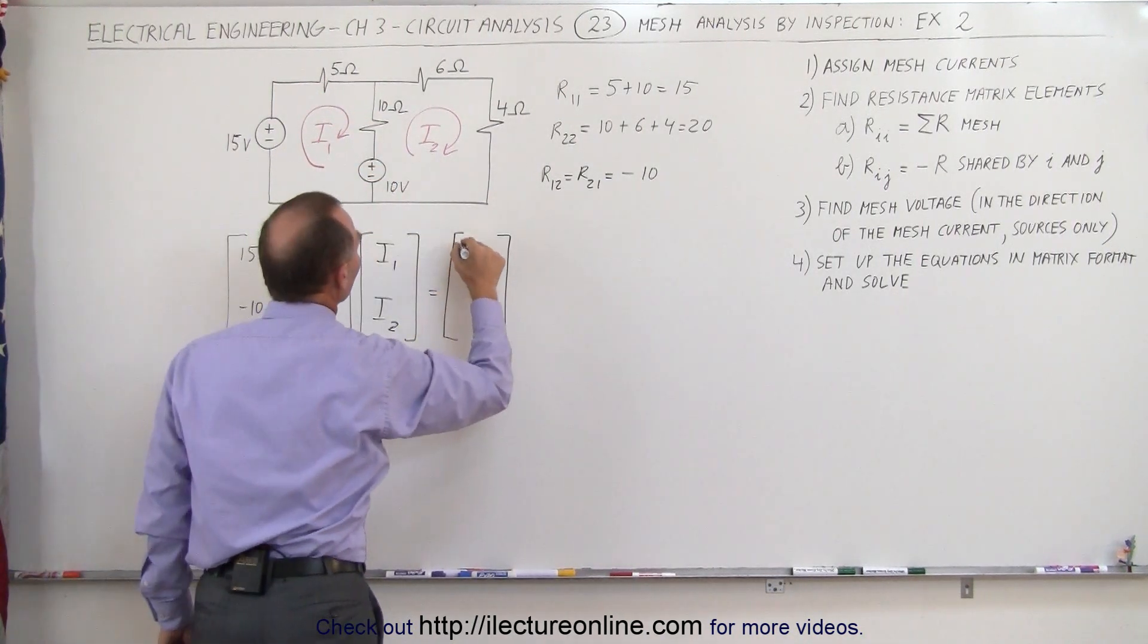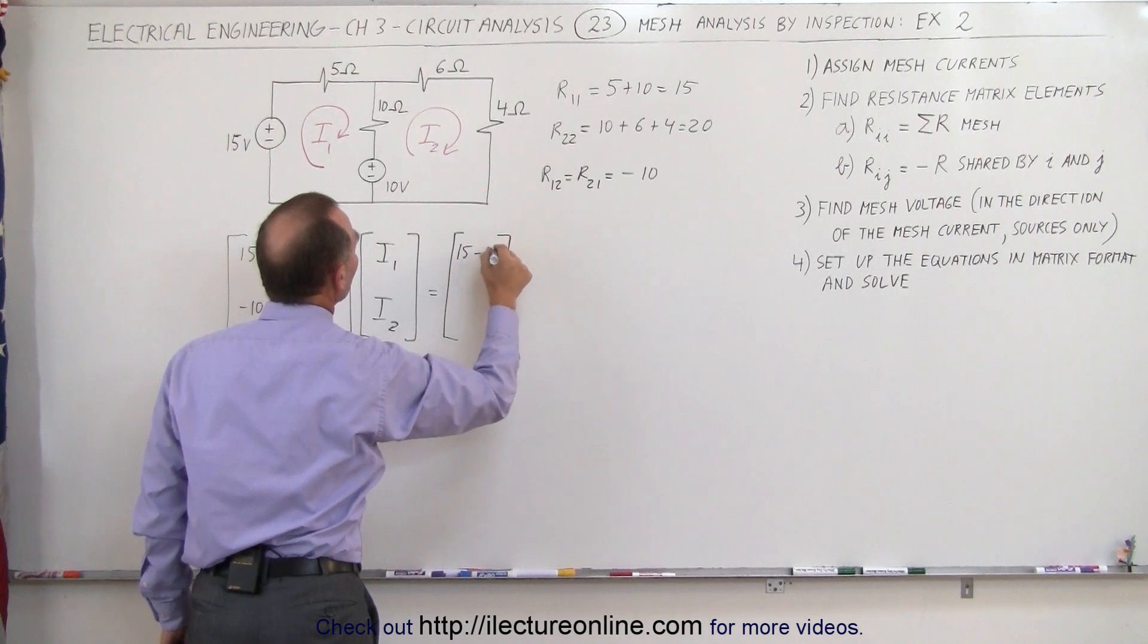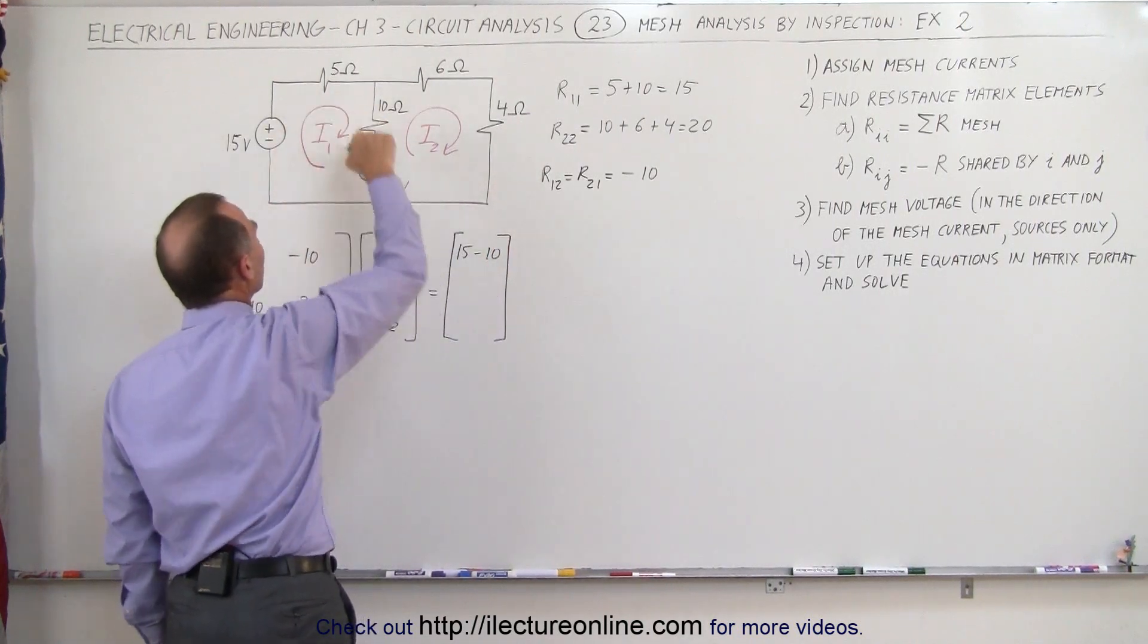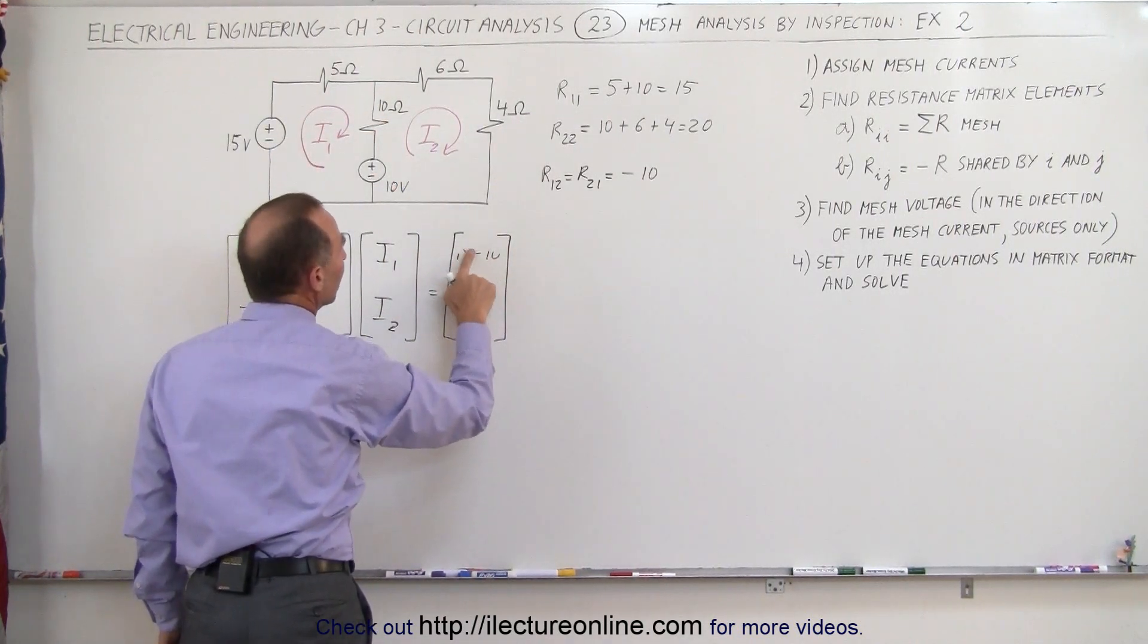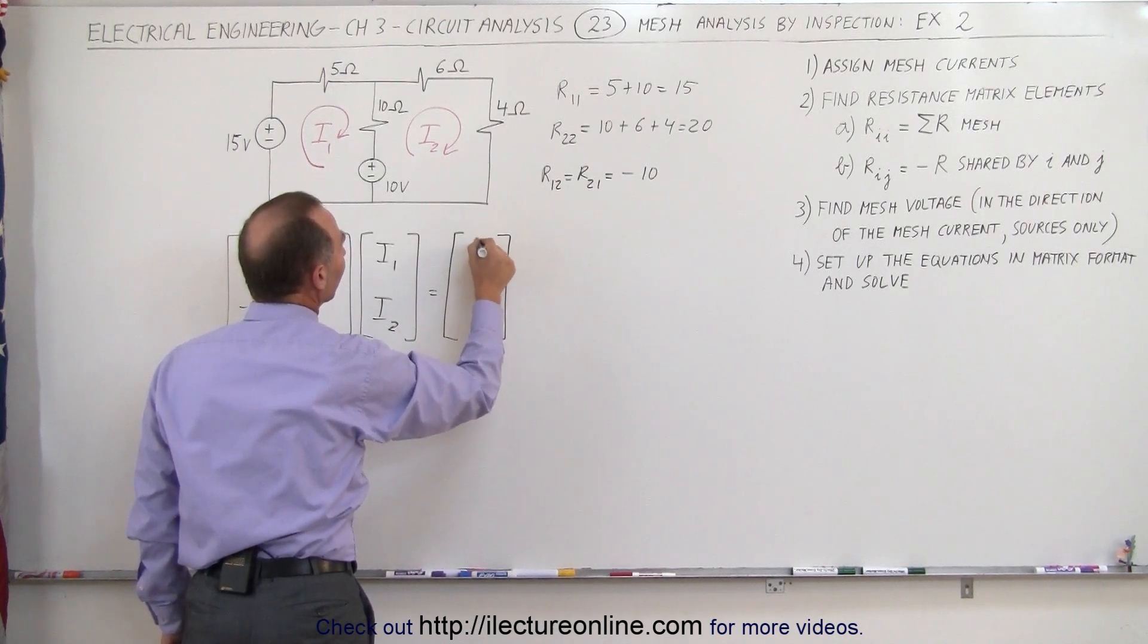So the net result is 15 rise minus 10 drop. That's the total sum of all the voltages around the loop, so that's equal to 5 volts in this case.